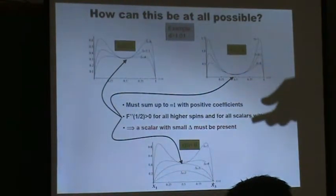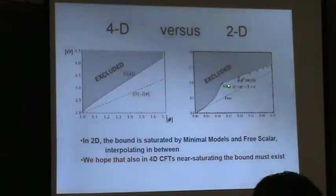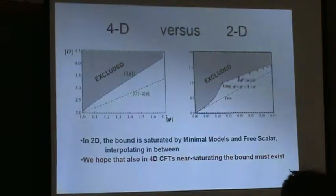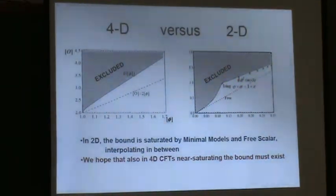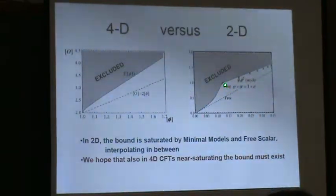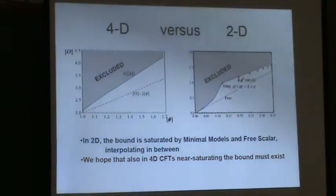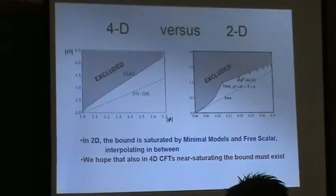Comparing the bound found in four dimensions with an analogous bound in two dimensions is illuminating. In two dimensions we have many known CFT examples — the minimal model CFTs. The Ising model almost saturates the two-dimensional bound, and higher minimal models also nearly saturate it. So if you didn't know about the Ising model, you could discover it just by looking at this plot and noticing something interesting happening at that point. The hope is that four-dimensional theories also exist which saturate or nearly saturate the four-dimensional bound, and one day we'll discover them.